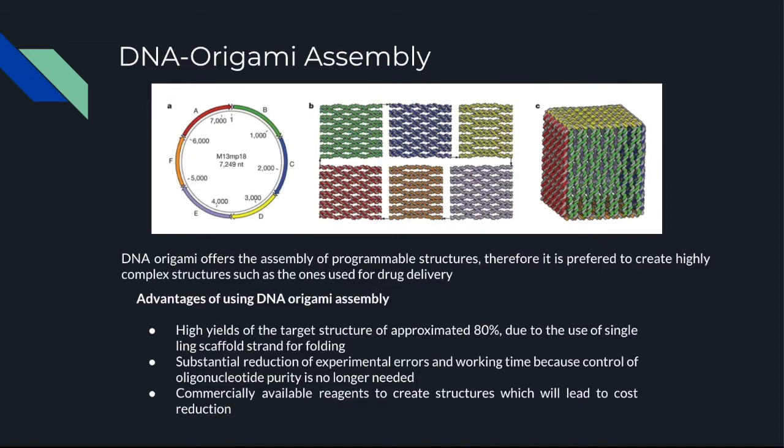One of the main advantages of using DNA origami over previously mentioned techniques is that it offers a high yield of the target structure — approximately 80% — due to the use of a single-linked scaffold strand for folding. Finally, production costs are reduced because reagents are widely commercially available. Next, I'll pass it on to Evie to talk more about the limitations of nanomachines in drug delivery.